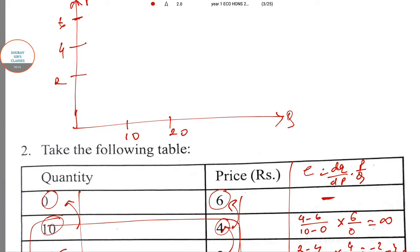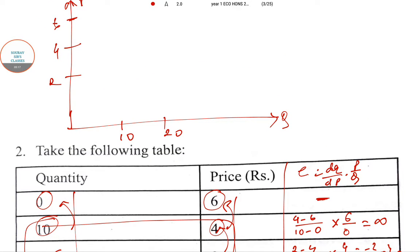This is the very first point on the demand curve, then 4 with 10 is the second point, then 2 with 20 is the third point, then 2 with 30. This is the demand curve, so we have a kink at P = 2.